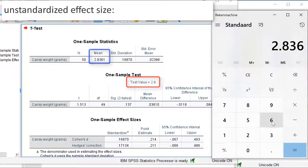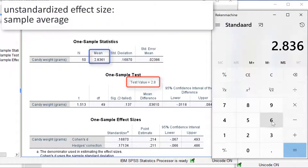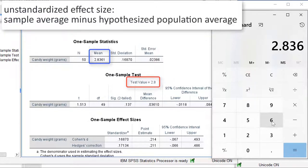Our unstandardized effect size is the average that we find in our sample, 2.836, minus what we hypothesized for the population, 2.8, which is a difference of 0.036 grams. This is our unstandardized effect size.